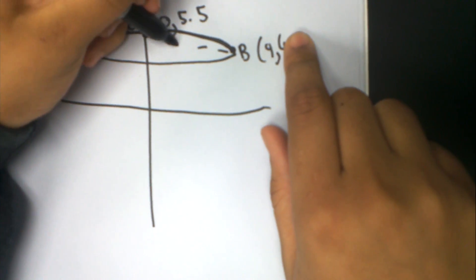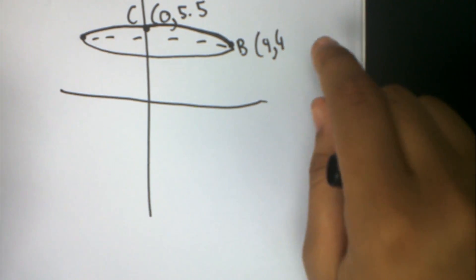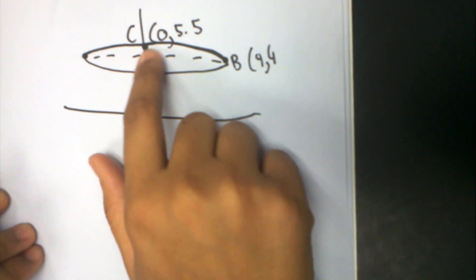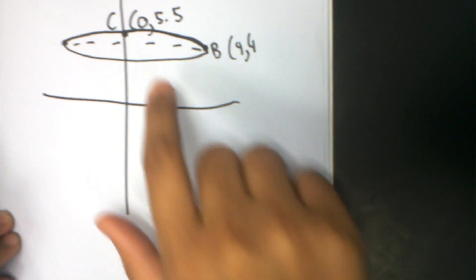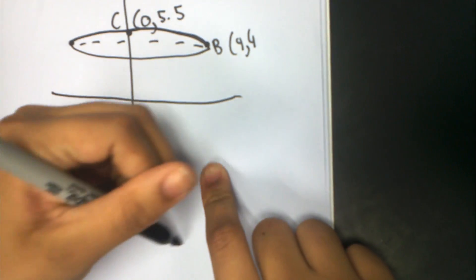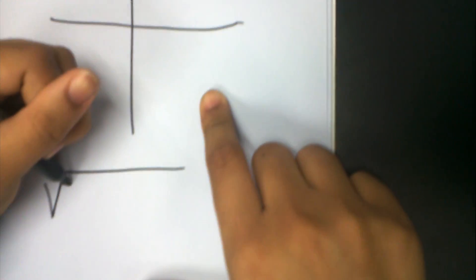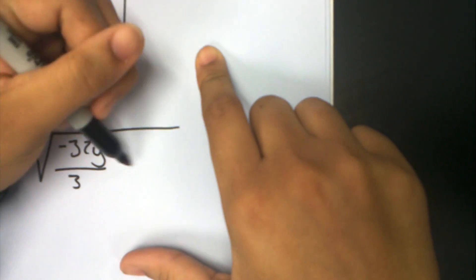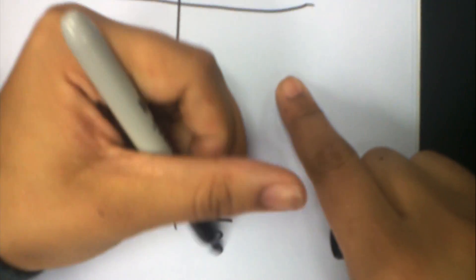This is the shape, and now we're going to find the volume of it. Before, we found the equation of the parabola BC, and it was the square root of negative 32y over 3 plus 176 over 3.